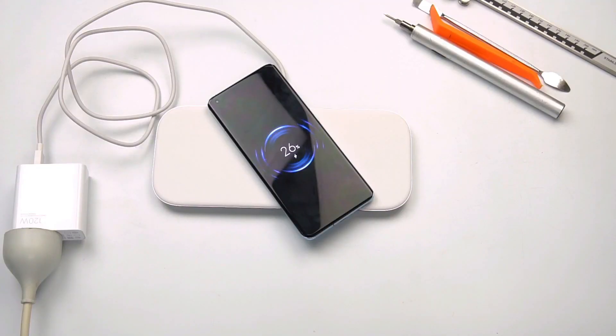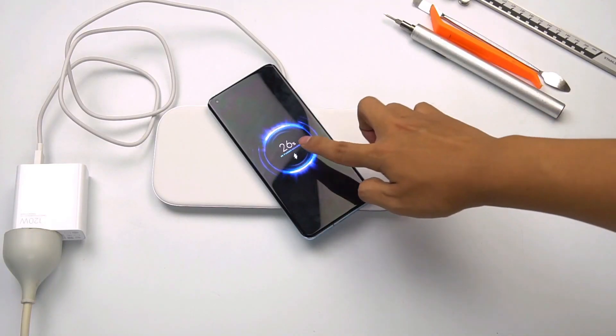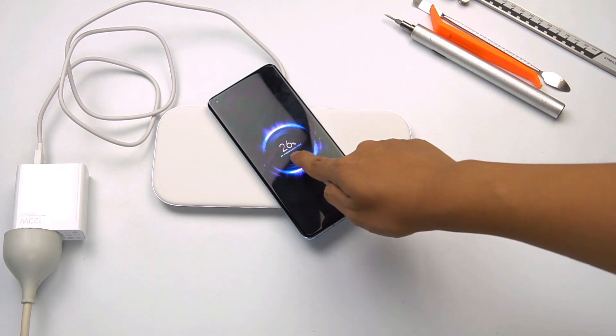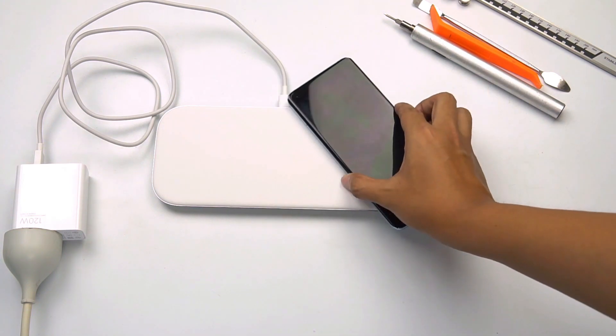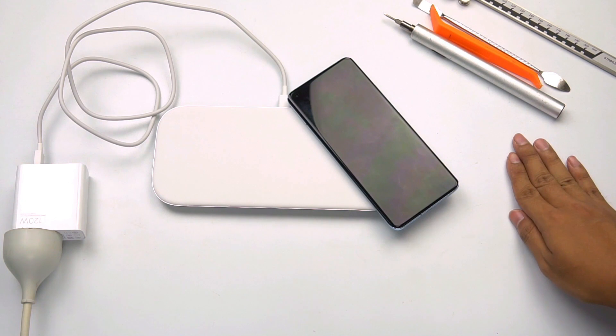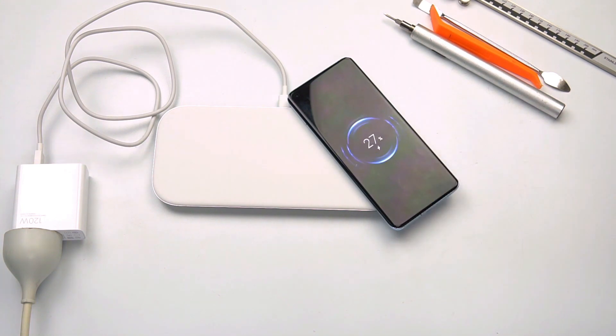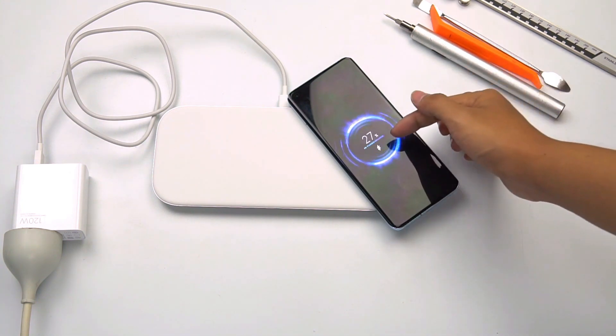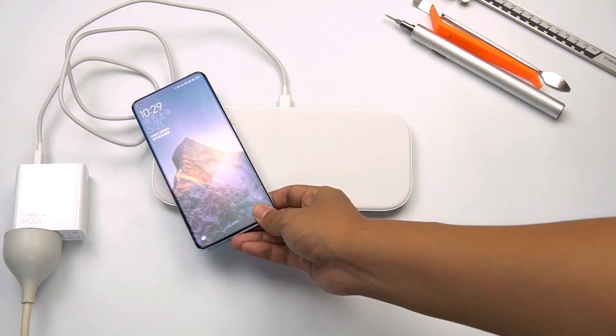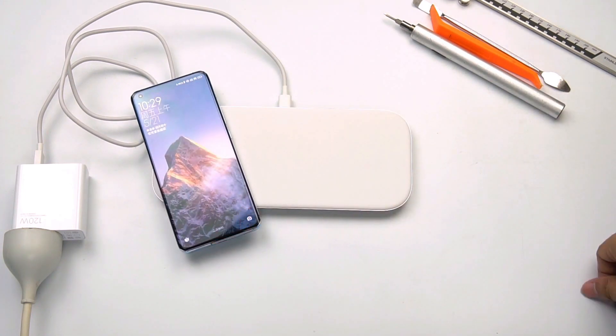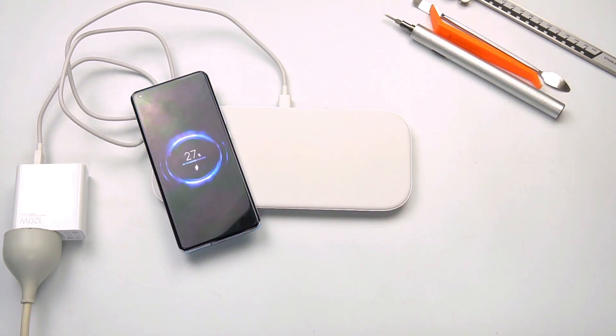We can see the fast charging mark if we use it to charge the Mi 11, which means the private protocol has been triggered, I think. Put it to the corner of the panel. Yep, it can be charged successfully. And we see the fast charging mark as well. Let's try another place. Same thing.